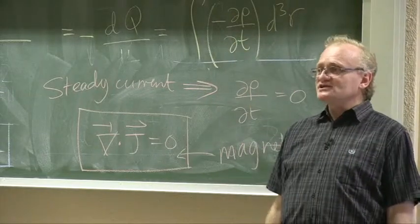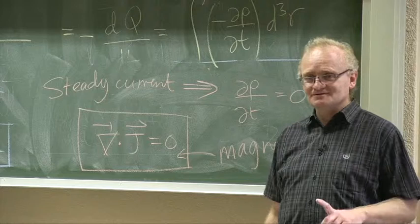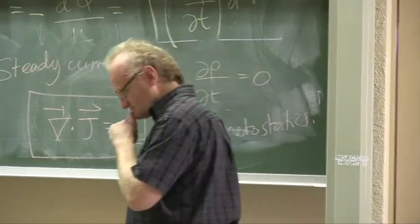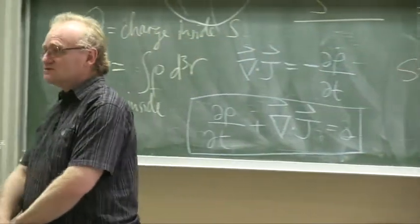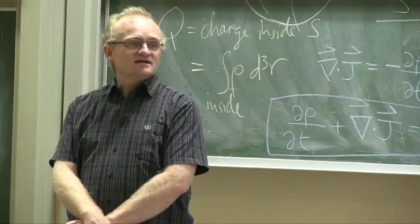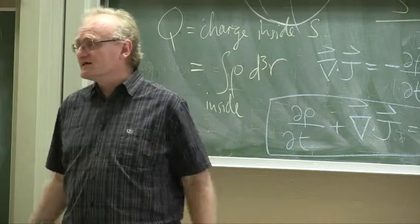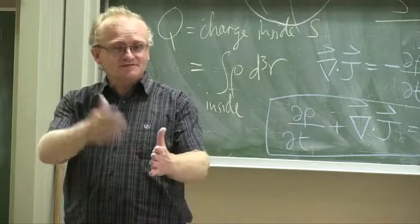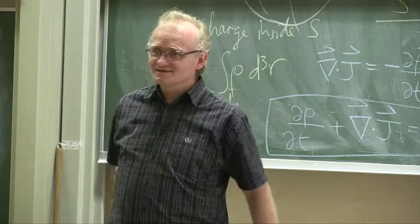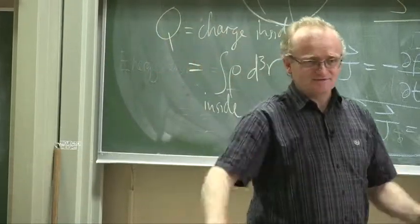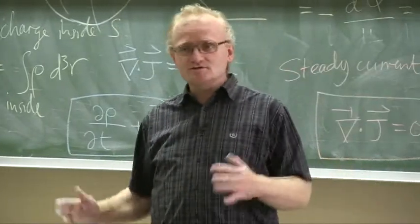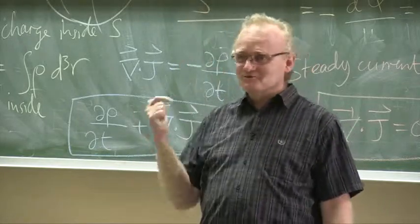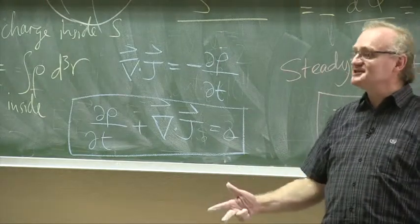So one last thing for this lecture — the joke. Three people are flying in a plane sitting together in a row of three seats. After talking, they realize one is a mathematician, one is a physicist, and one is an engineer.